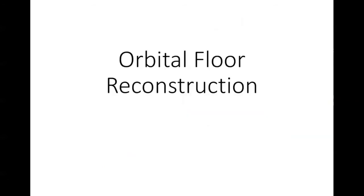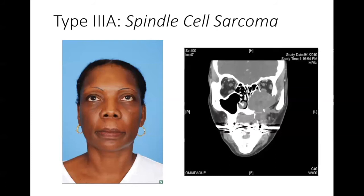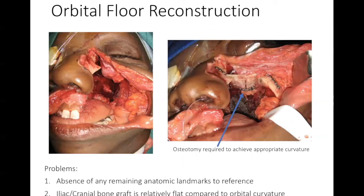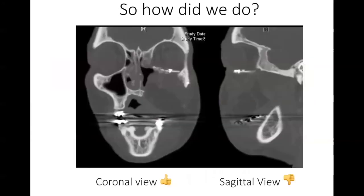Let's move to the orbital floor and the advantages of CAD here. This is a large tumor involving the left maxillary sinus, and the patient's preoperative clinical photo shows proptosis of the eye. Intraoperatively, there's an absence of any remaining anatomic landmarks, and with iliac crest or cranial bone graft traditionally used to replace the orbital floor, it is relatively flat compared to orbital curvature. I needed to make an osteotomy in the iliac crest bone graft to achieve appropriate curvature. Postoperatively, the coronal view shows good match with uninvolved anatomy on the right, but the sagittal view shows we lack the upward trajectory of the orbital floor toward the orbital apex, creating increased intraorbital volume and potentially leading to enophthalmos.